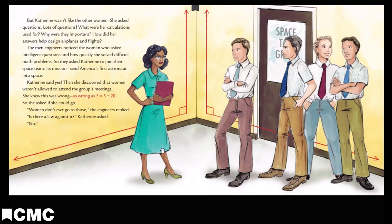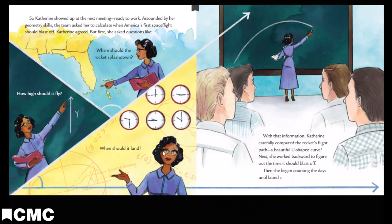Its mission: send America's first astronaut into space. Catherine said yes. Then she discovered that women weren't allowed to attend the group's meetings. She knew this was wrong, as wrong as 5 times 5 equals 20. So she asked if she could go. "Women don't ever go to those," the engineers replied. "Is there a law against it?" Catherine asked. "No." So Catherine showed up at the next meeting, ready to work.